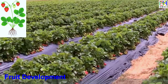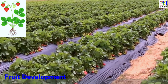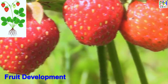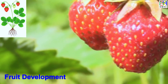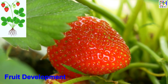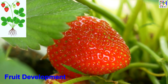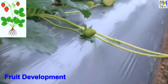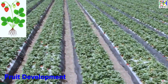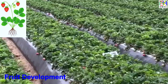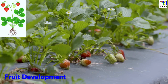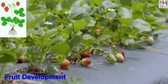The fruit's size increases, and its color changes from green to white, then to pink, and finally to a deep red color. The texture also changes from hard to soft as the fruit matures, and the sweetness and flavor also develop. The fruit development stage can last for several weeks, depending on the variety of strawberry and the growing conditions. This stage is a critical period in the life cycle of the plant, as it determines the quality and yield of the crop.